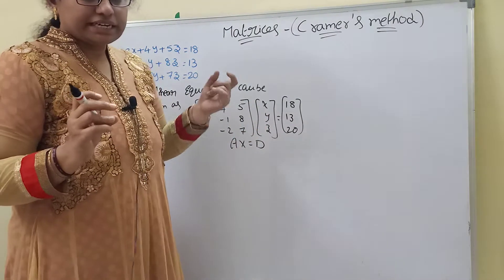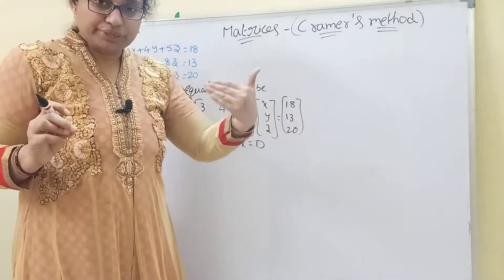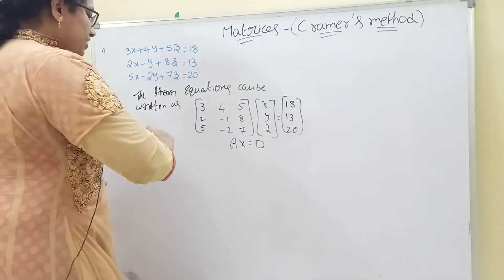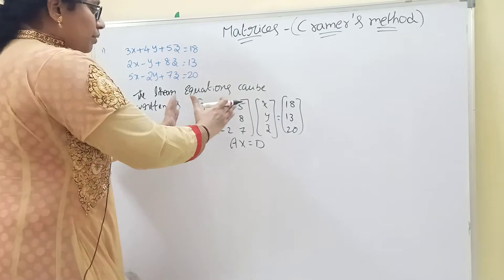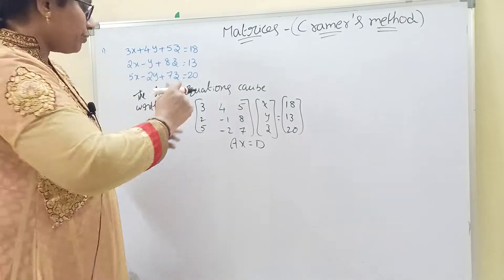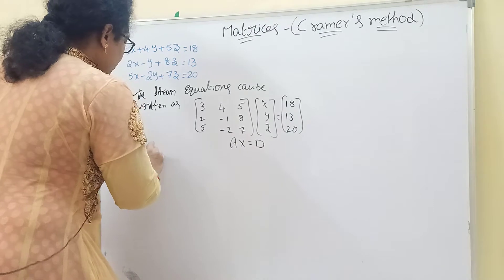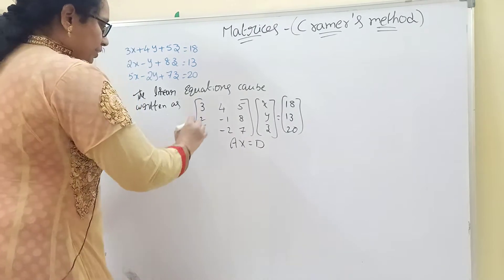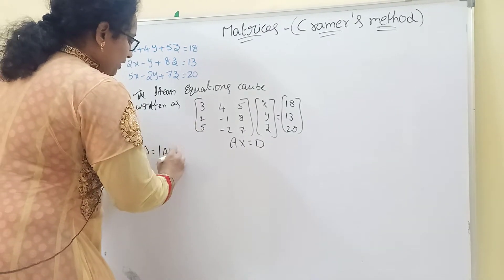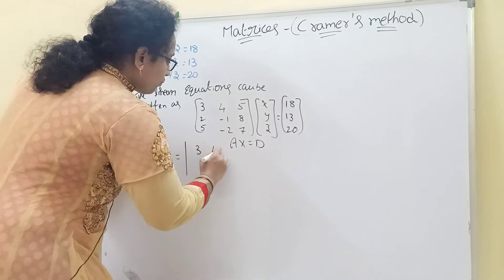In Cramer's method, we need to find four determinants: delta, delta 1, delta 2, and delta 3. Delta is the determinant of matrix A. So delta equals the determinant of A.